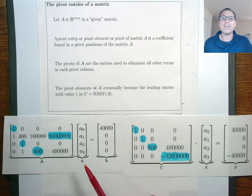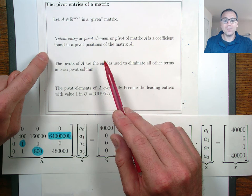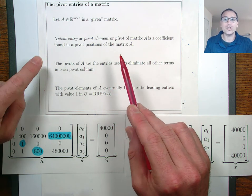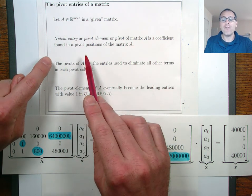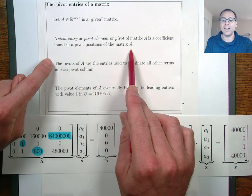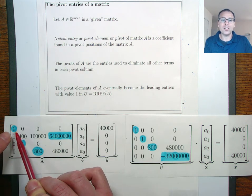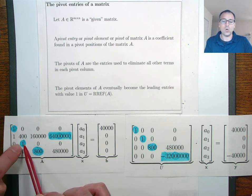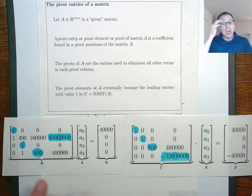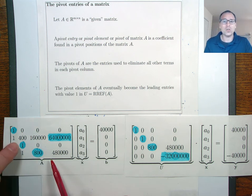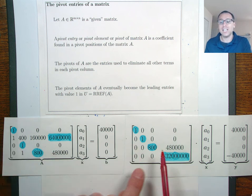In addition to pivot positions, we also have something called pivot entries of our matrix. A pivot entry, also known as a pivot element, or simply a pivot, of the matrix A is the coefficient found in the pivot positions of the matrix A. In our final approach linear systems example, the first pivot has value 1, the second pivot has value 1, the third pivot has value 800, and the fourth pivot has value 64 million. Notice that the pivot entries of the matrix A are not the same values as the pivots in the matrix U, so we have to be a little careful.